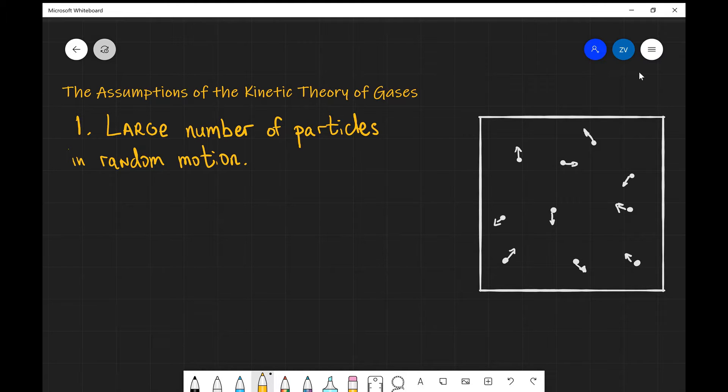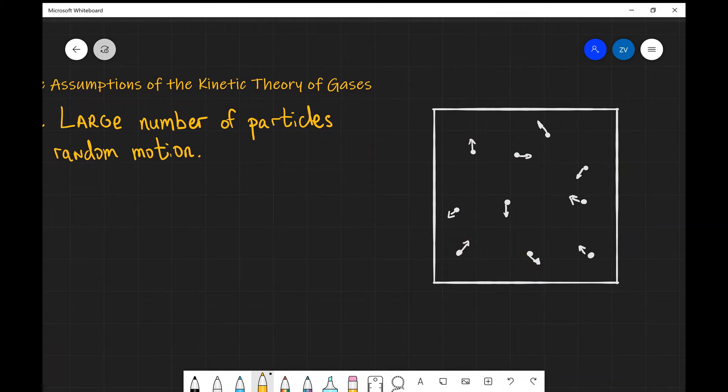Number one, there are large number of particles in random motion. Let's imagine that we have an ideal gas over here on the right. If we're able to zoom into it so that we can see those particles, we imagine that they're little spheres, we're going to notice that they're in random motion. In other words, their velocities are completely random, they have different sizes, they have different directions in particular, and there's no preferred direction of motion.